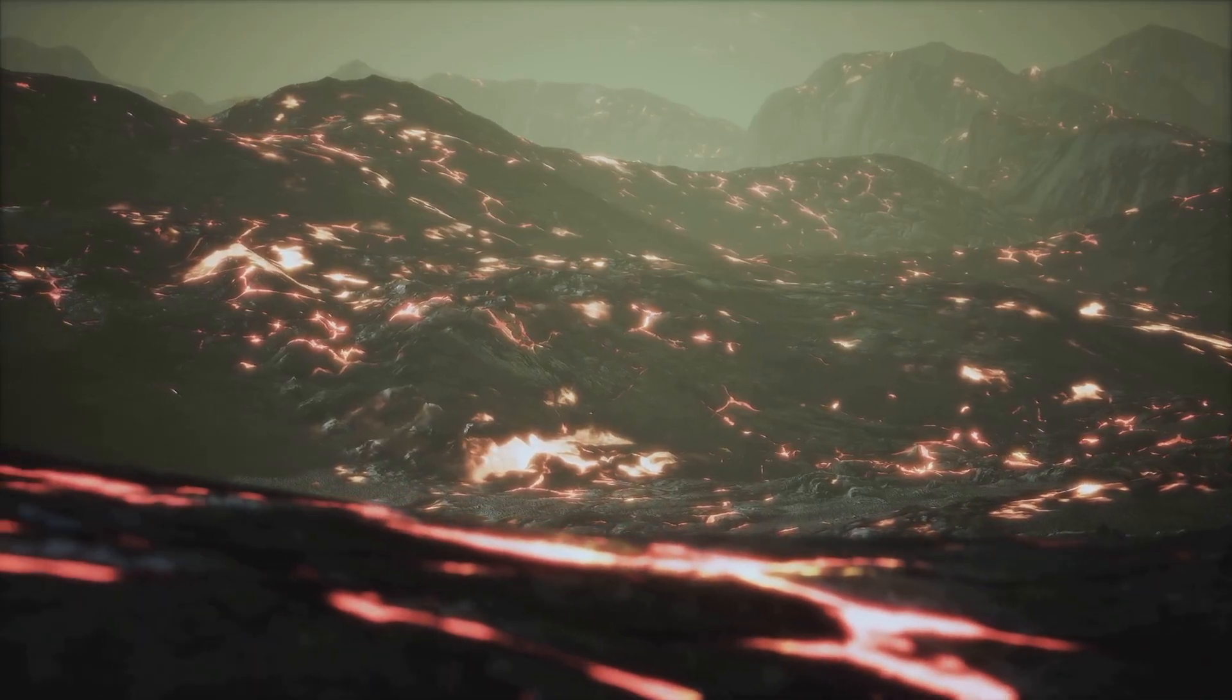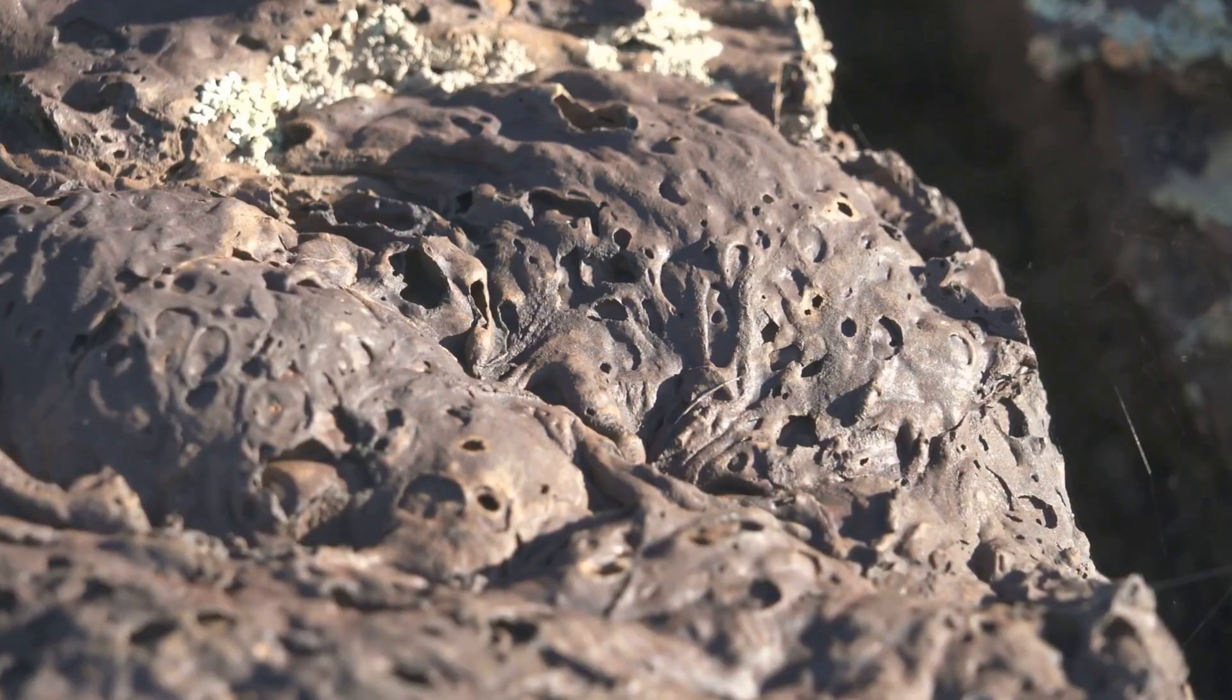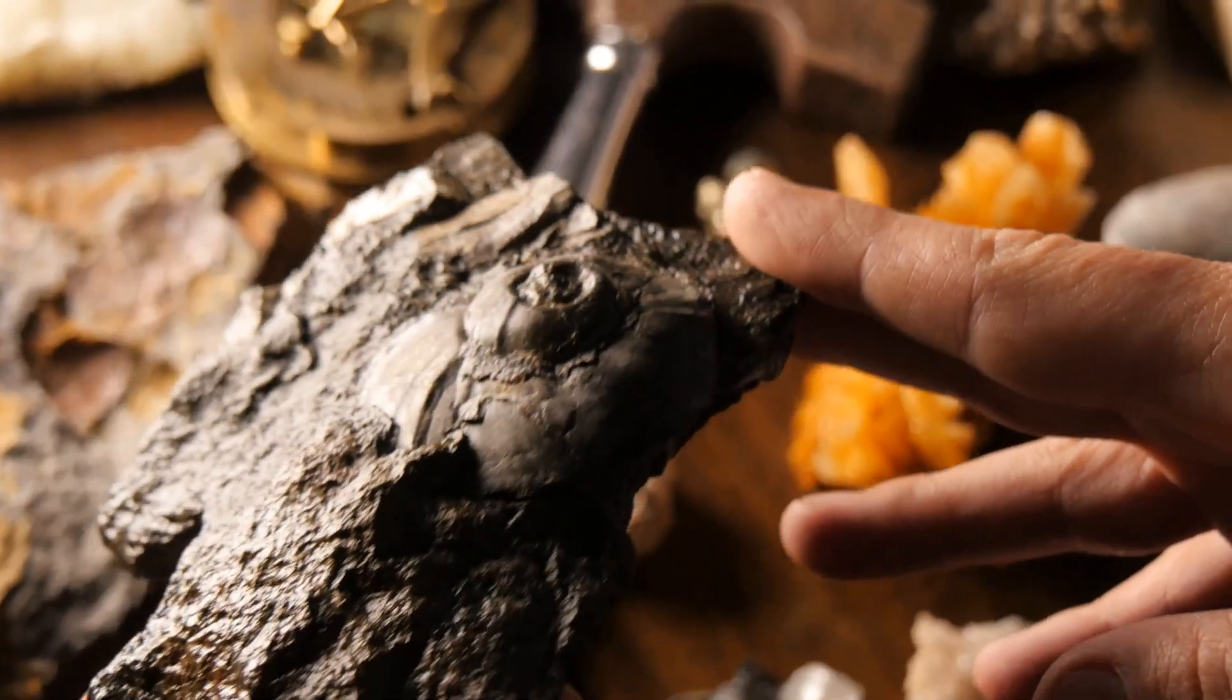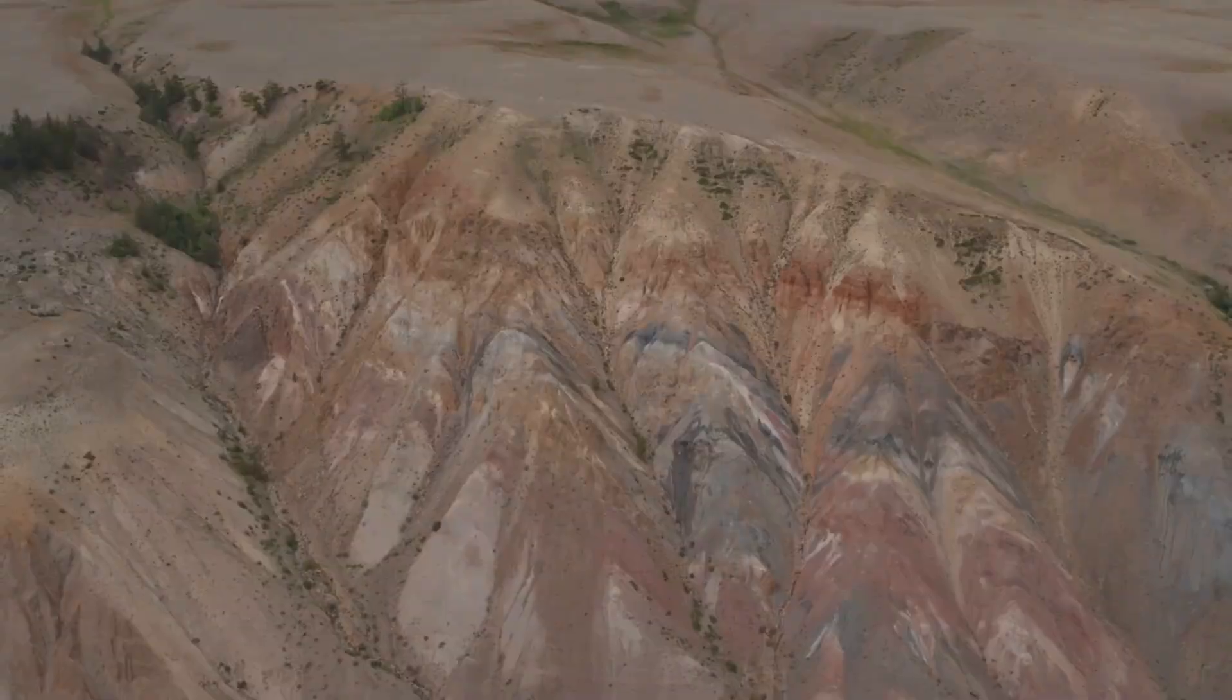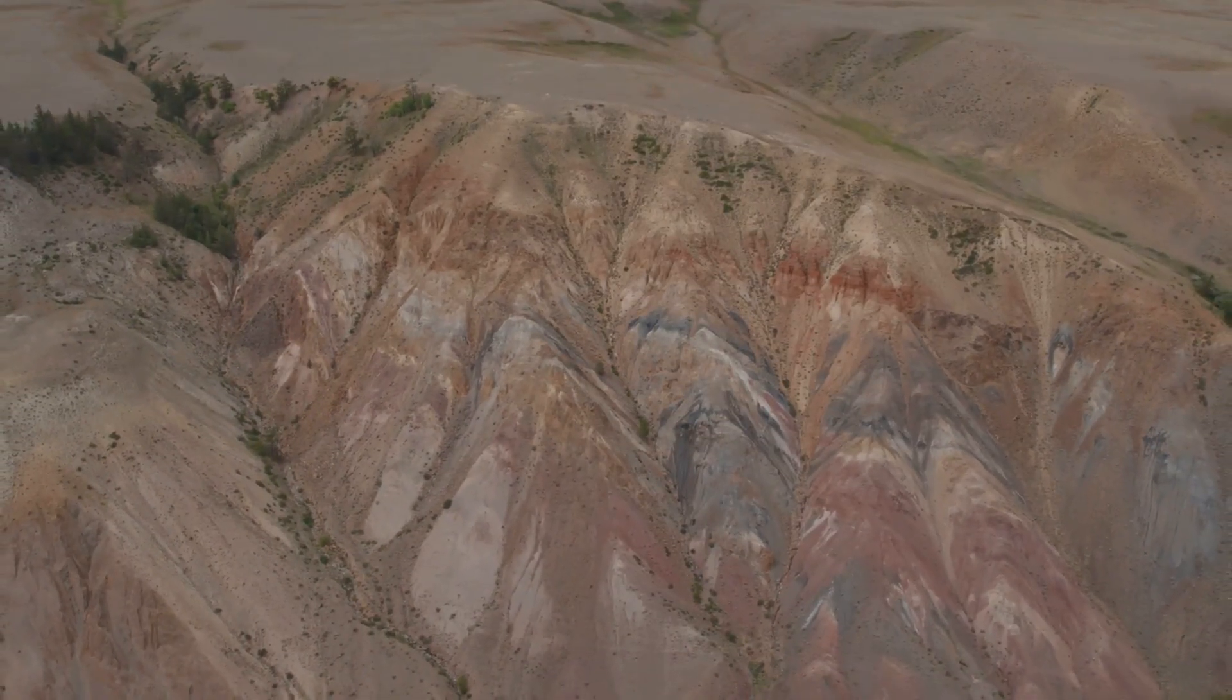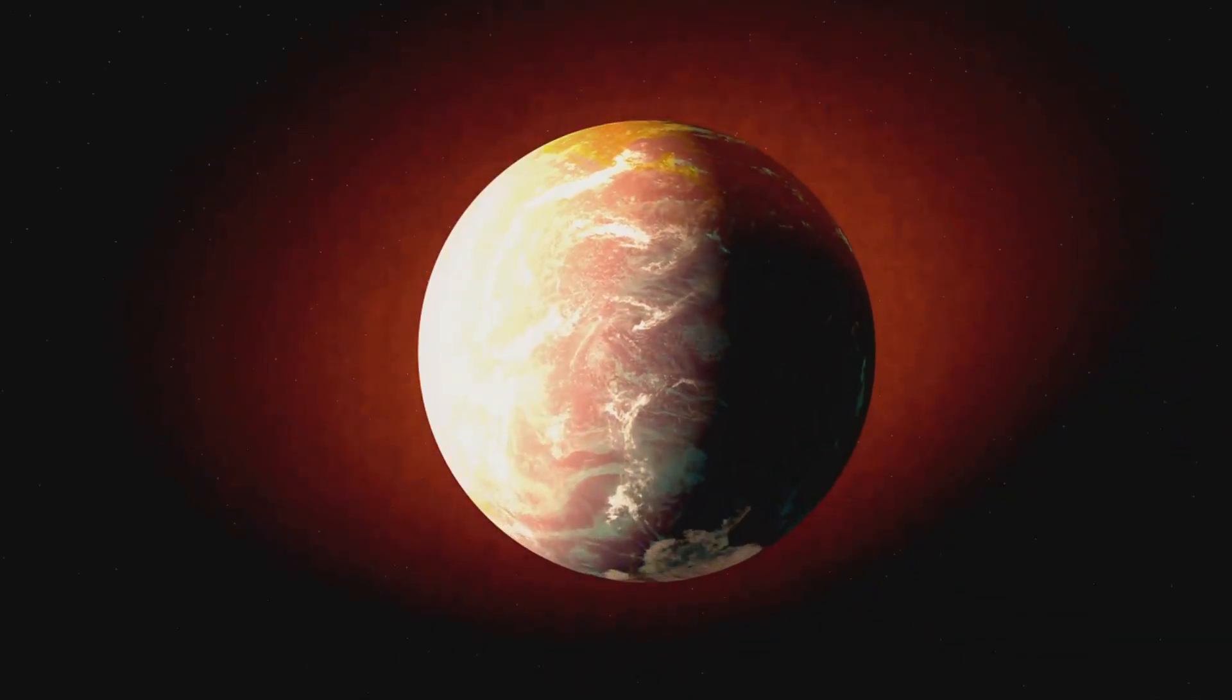Scientists study ancient lava flows to track these changes. When volcanic rock cools, it records the direction of the magnetic field, preserving a snapshot of the past. These records show that reversals are common. Hundreds have occurred over millions of years. Earth's magnetic field is always in flux, and reversals are part of its natural cycle.